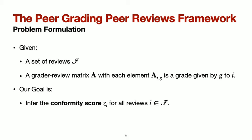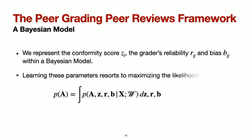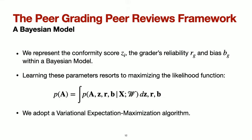To formulate our problem: given a set of reviews I, a grader review matrix A, where each element A_ig is the grade given by grader g to review i, our goal is to infer the conformity score Z_I for all reviews i in the set I. We represent the conformity score Z_I, the grader's reliability, and bias within a Bayesian model. Learning the parameters resorts to maximizing a likelihood function, where A is the grader's review matrix, Z_I is the latent conformity, and R and B_R are respectively the reliability and bias for all graders. We optimize this using the variational expectation maximization algorithm.